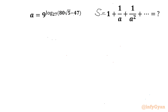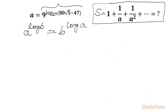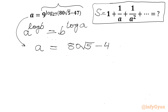Let us consider the required sum as S. Now I will use one log property: a raised to the power log b equals b raised to the power log a. I will apply this property here. So I can write a equal to (80√5 minus 47) raised to the power log 9 with base 27.